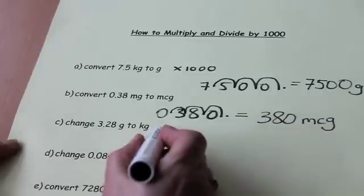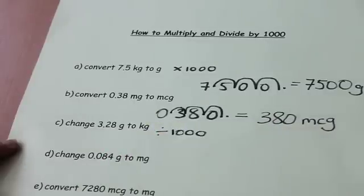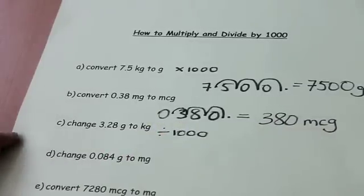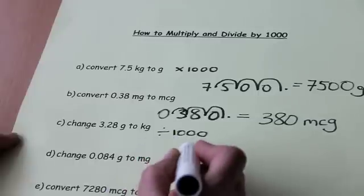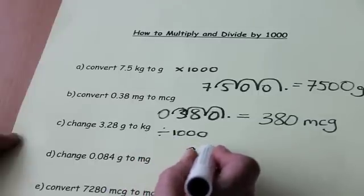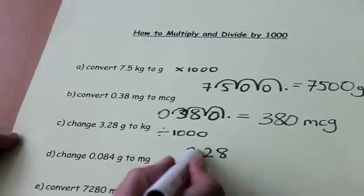So we're going to divide by 1,000 and this means that the decimal point will now move three places to the left. So I shall start with my number, 3.28 and the decimal point will jump three places.